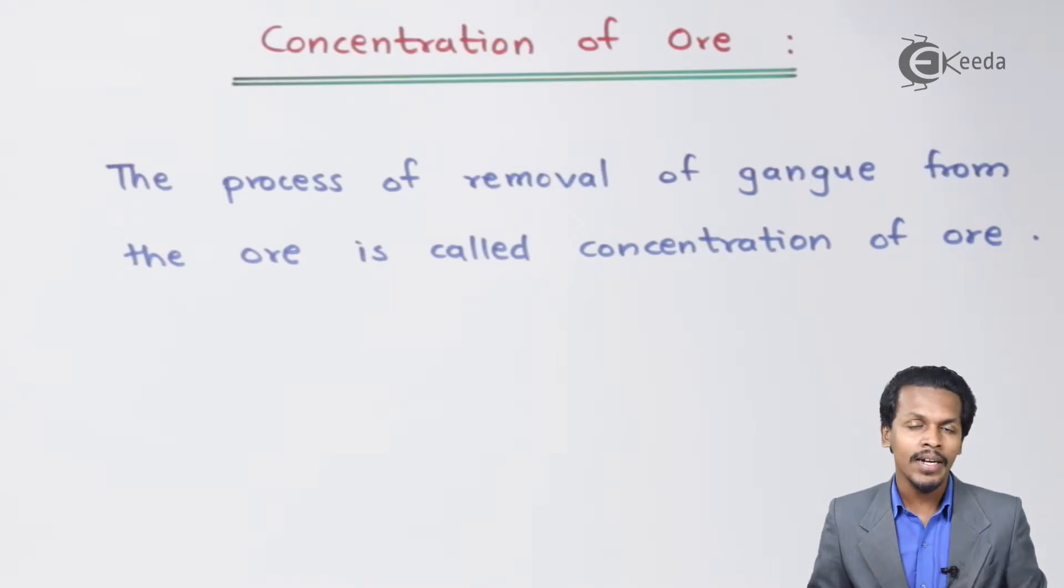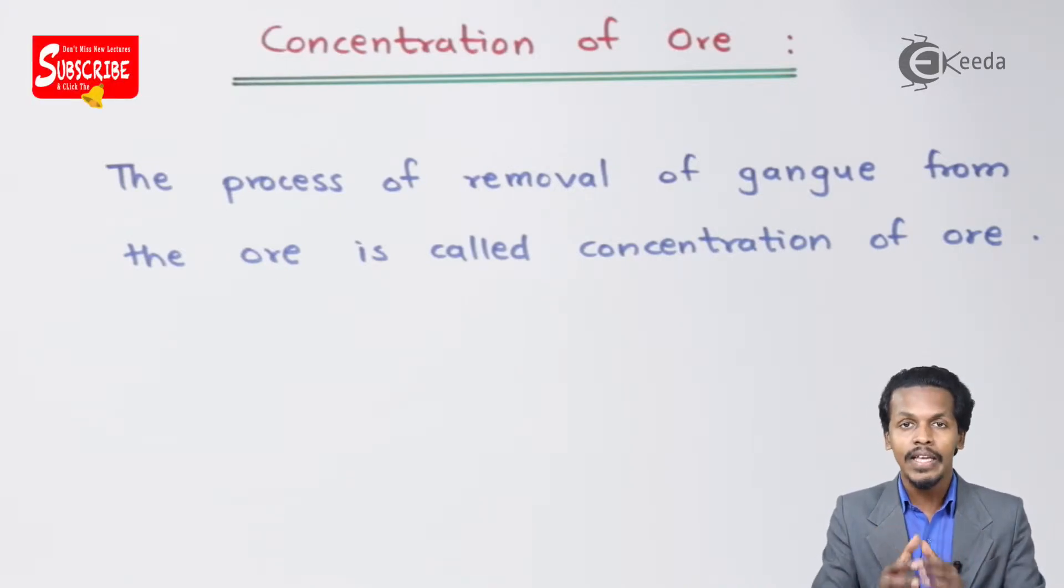This is the most important part of the whole metallurgical process. The reason is that in this process we are removing the impurity in the form of gangue, which increases the percentage of metal in the ore.